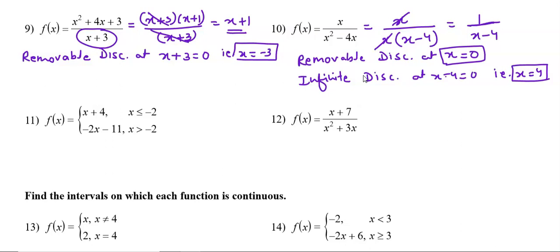Question number 11 is a piecewise function, solved differently. We have to check where the function is discontinuous. The first part is a linear function — continuous throughout. The second part is also a linear function — continuous throughout. The only point to check is at x = -2.